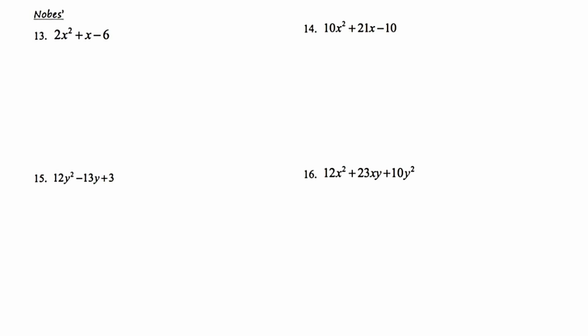Here's what we're going to do. We start by multiplying the first and last numbers together. In number 13, that gives 2 times negative 6, which is negative 12. Now I'm going to make a very organized list of all the factor pairings of negative 12. Amongst these pairings, I need to pick the winner — the one that gives a difference of 1 — because the middle term has a coefficient of 1. So I'm going to pick 3 and 4, since their difference is 1.